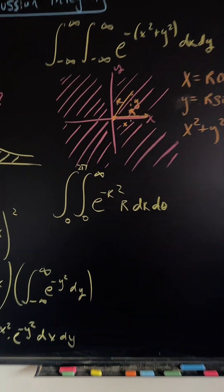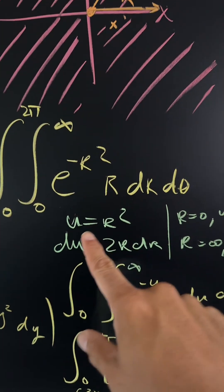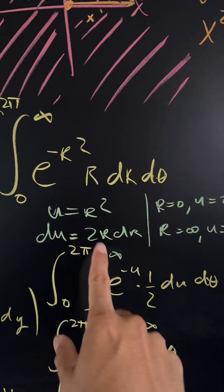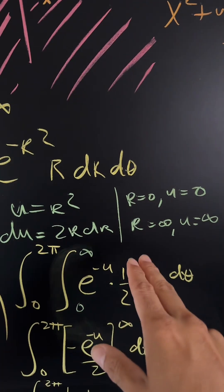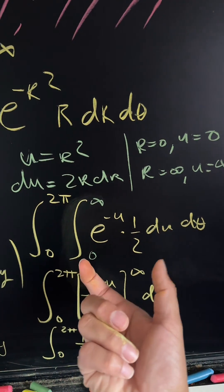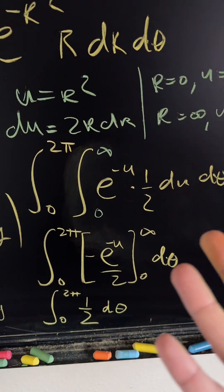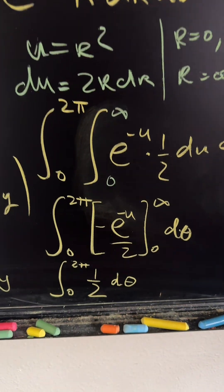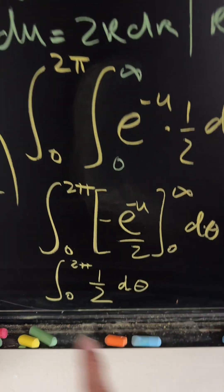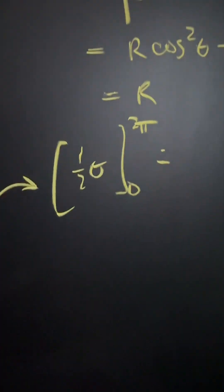We are now able to integrate. First, we integrate with respect to r using a u-substitution, letting u equal r squared. The differential becomes du equals 2r dr, and the bounds stay the same: when r equals zero, u equals zero; when r approaches infinity, u approaches infinity. Integrating gives negative e to the negative u over two, and applying the fundamental theorem of calculus: as it approaches infinity, e to the negative infinity is zero, minus e to the zero gives positive one half. Then integrating one half over theta from zero to two pi gives one half times two pi, which equals pi.